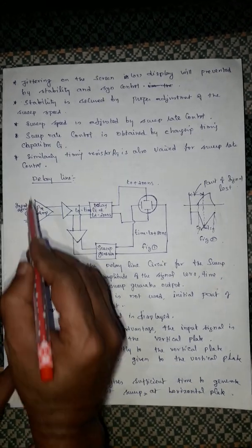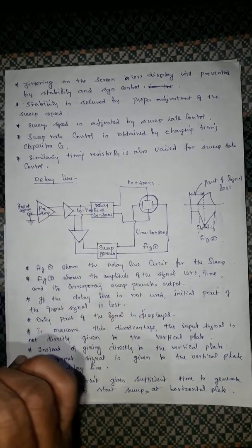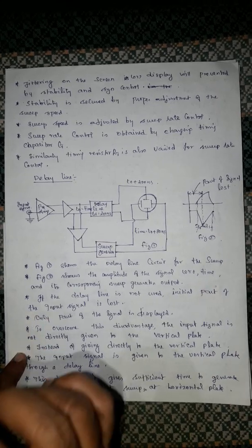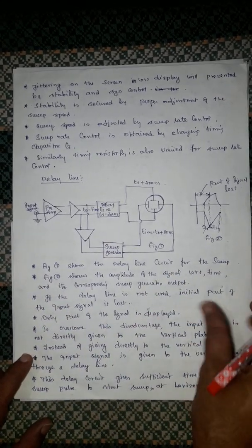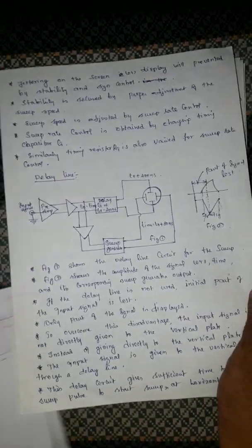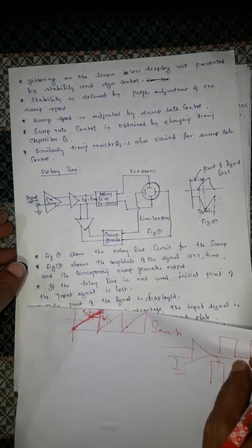Okay, next topic is delay line. As the name itself suggests, we can understand easily what is called a delay line - simply, it makes a delay to something. In CRO, we are having two important components.